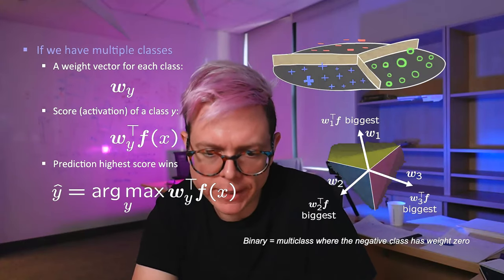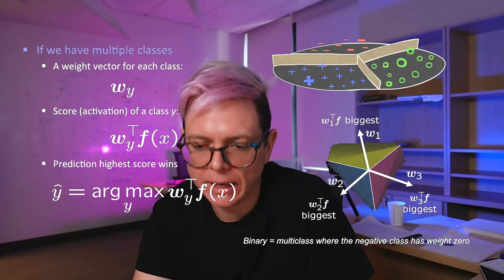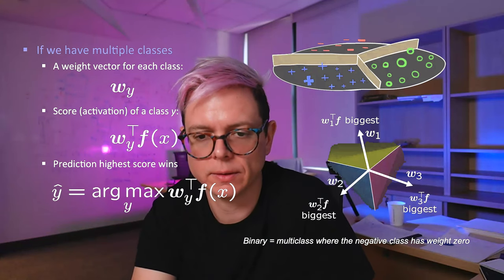Let's see how we learn these weights for the multi-class case. We start again with weights equal to zero. The weight W is bold because it's a vector. In the binary case, it's essentially the same as multi-class where the negative class has weight zero. We pick up a training sample X and Y, extract the feature vector F from X.